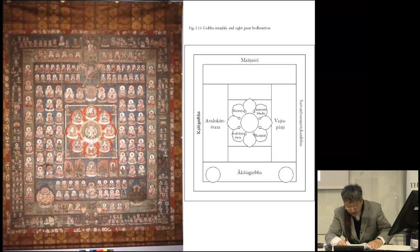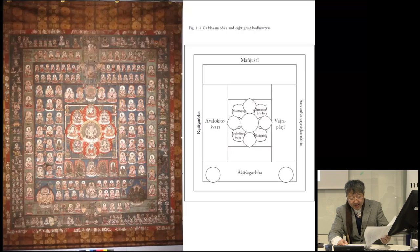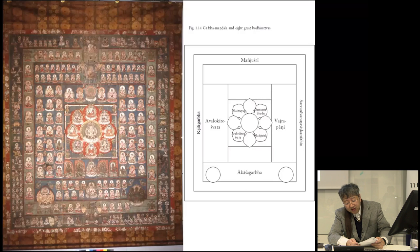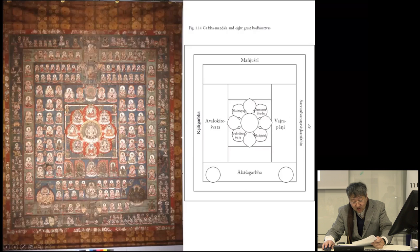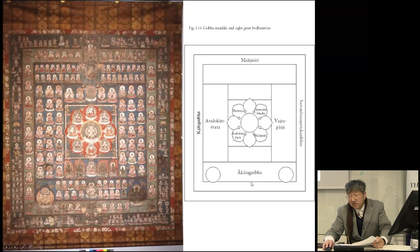It is worth noting that the combination of Vairocana Abhisambodhi and the Eight Great Bodhisattvas represents the essence of the principal deity of the Garbha Mandala. In the Genzui Mandala, eight great bodhisattvas are arranged along the central axis — Kshitigarbha, Avalokiteshvara, Vajrapani, and Sarvanivarna-Vishkambhin along the north-south axis, and Manjushri, Akashagarbha along the east-west axis.